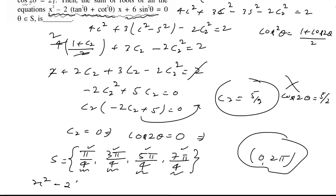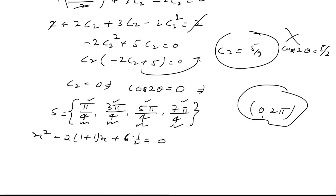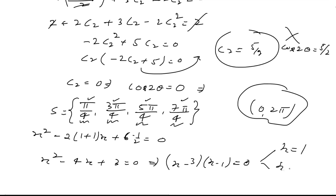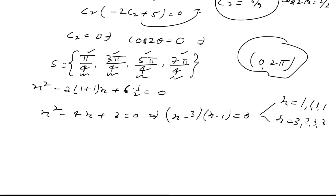The quadratic equation becomes: x² - 2(sin²θ + tan²θ)x + 6sin²θ = 0. With sin²θ = 1/2 and tan²θ = 1, coefficient becomes 2(1/2 + 1) = 2 × (3/2) = ... so x² - 4x + 3 = 0 for each θ in S. Factoring: (x - 3)(x - 1) = 0, so roots are x = 1 and x = 3.